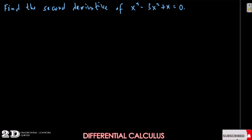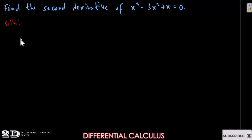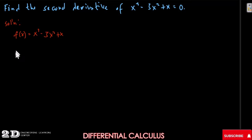Okay, so we have this example. We need to find the second derivative of the function x cubed minus 5x squared plus x, equal to 0. So we'll first have our solution. Let's say our f of x is equal to x cubed minus 5x squared plus x. We will first get our first derivative.